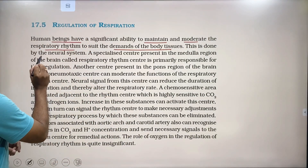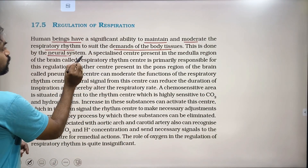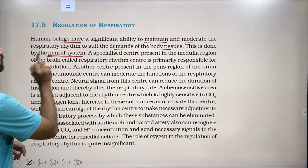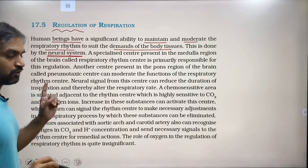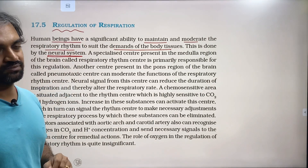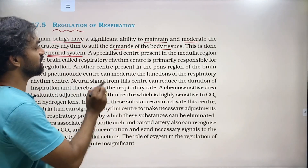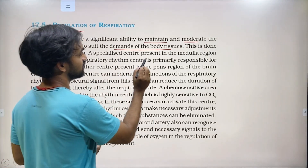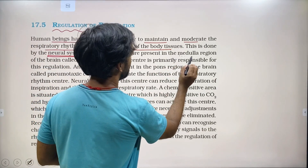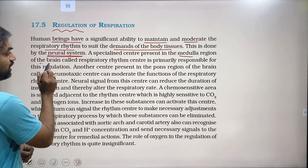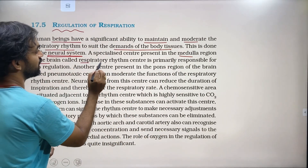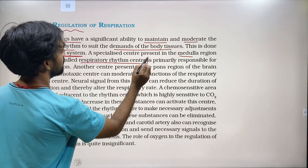This regulation is done by the neural system. A specialized center is present in the medulla region of the brain called the respiratory rhythm center. This is very important — note it as a potential exam question.